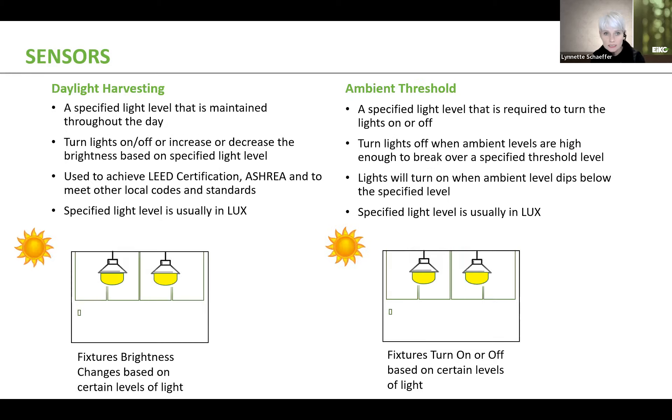Now, daylight harvesting is a form of a photo sensor or photo cell. It's slightly different in the fact that with daylight harvesting, which is used in a lot of commercial type applications where you have natural sunlight coming through the space, that sensor is programmed to look for a specified light level. It's up to the owner or the installer to state whatever that level needs to be. But basically, that daylight harvesting sensor maintains that specified light level throughout the day. So in this example, in the lower left hand corner, as the sun comes up, you're going to notice that the lights will dim down.